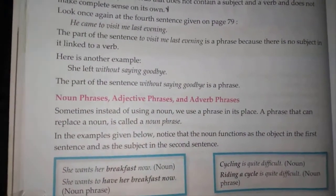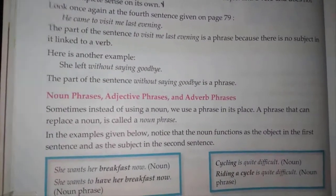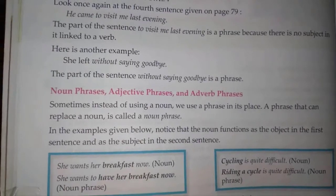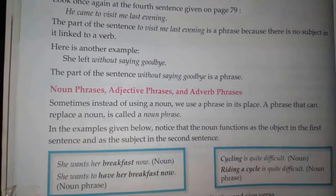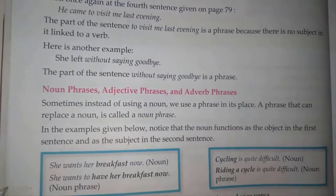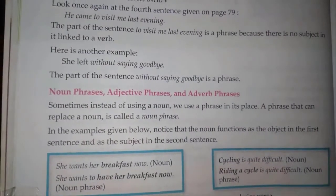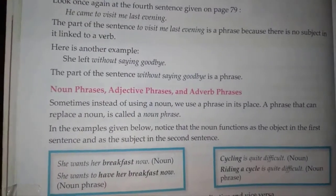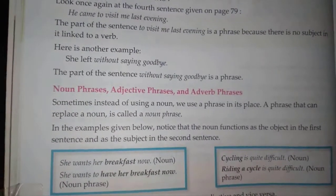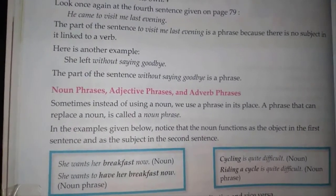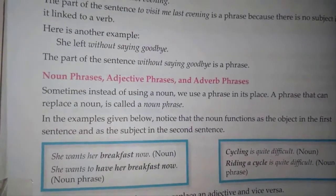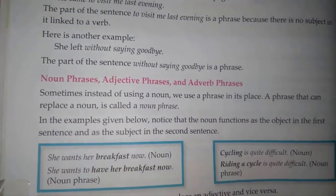Sometimes instead of using a noun we use a phrase in its place. A phrase that can replace a noun is called a noun phrase. In the examples given below, notice that the noun functions as the object in the first sentence and as the subject in the second sentence.